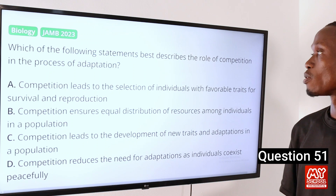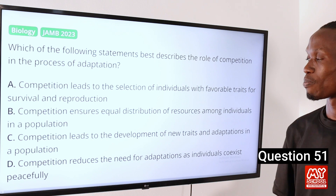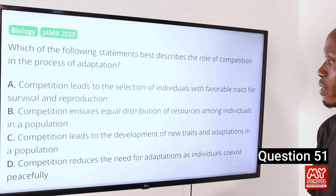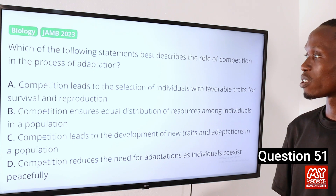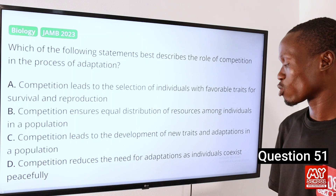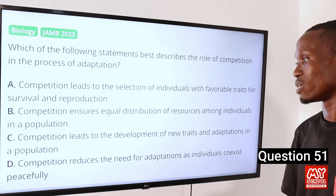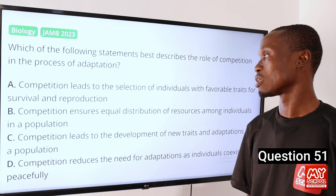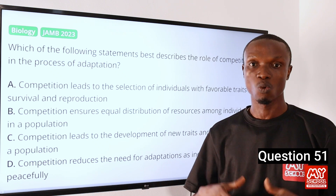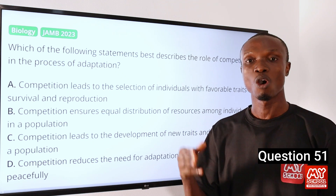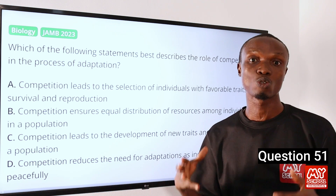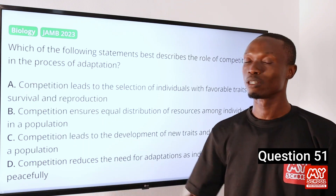Question 51. Which of the following statements best describes the role of competition in the process of adaptation? A. Competition leads to the selection of individuals with favorable traits for survival and reproduction. B. Competition ensures equal distribution of resources among individuals in the population. The answer is option A. When individuals within a population compete for limited resources like food, water, or mates, those with favorable traits that enhance their ability to acquire resources are more likely to survive and reproduce. So that makes option A the correct option.